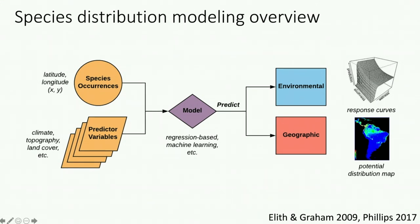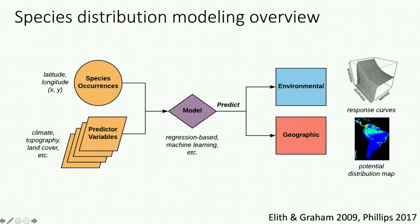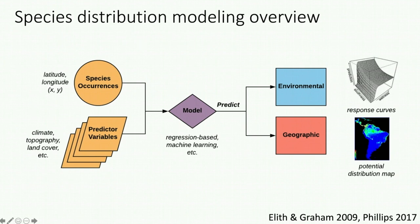A very quick overview about species distribution models — you probably know them quite well already. Species distribution models take species occurrences — coordinates in space — and predictor variables, which could include climate, topography, land cover, etc. They go into a model, which can be any number of different models — regression-based or machine learning — and the model will make different kinds of predictions. These predictions can be environmental, taking the form of a response curve showing how suitability goes up or down as a variable changes, and also geographic predictions, which are patterns of suitability on a map. I'll be discussing presence-only models today, because those are currently the ones that Wallace runs.